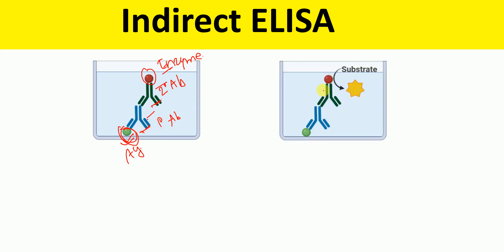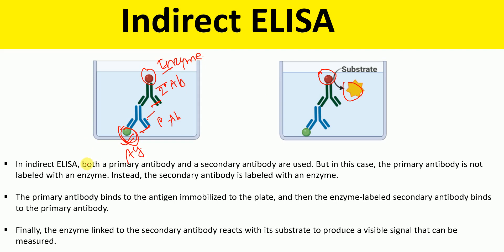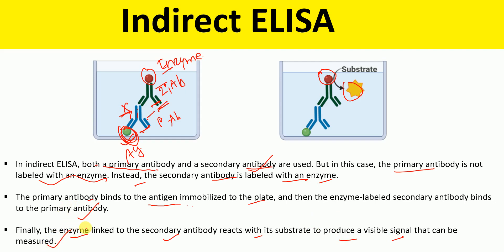After this process, the substrate is added, meaning that the reaction between the enzyme and the substrate occurs, resulting in a color signal. In indirect ELISA, both primary antibody and secondary antibody are used. The primary antibody is not labeled with an enzyme; instead, the secondary antibody is labeled with an enzyme. The primary antibody binds to the antigen immobilized to the plate, and then the enzyme-labeled secondary antibody binds to the primary antibody. Finally, the enzyme linked to the secondary antibody reacts with its substrate to produce a visible color signal that can be measured.